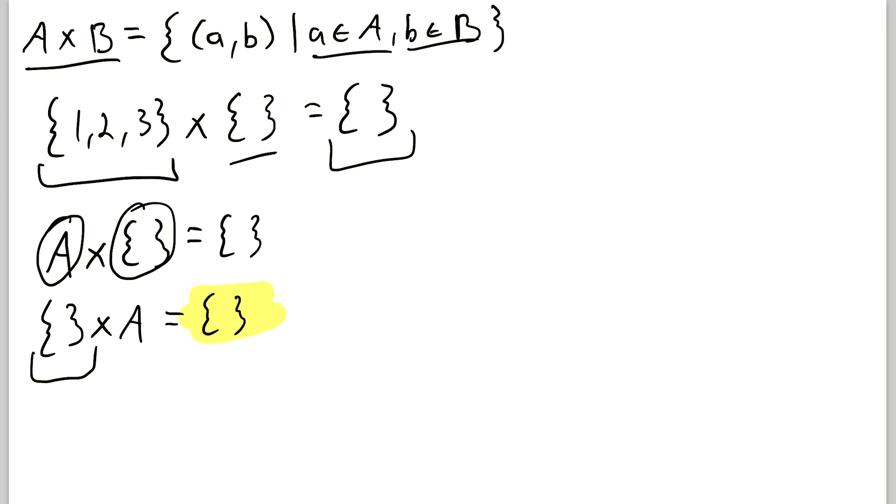And that's really all there is to it, so the Cartesian product of any set with the empty set is the empty set. So I hope this video helped you understand how Cartesian products work with empty sets. Let me know in the comments if you have any questions, need anything clarified, or have any other video requests.